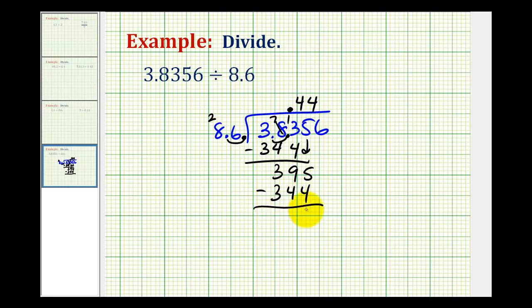And we subtract. We have 1, 5. So we have 51 which again is less than 86 so that's good.